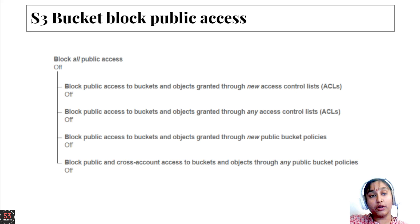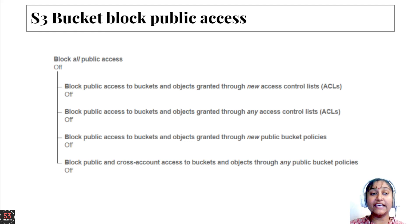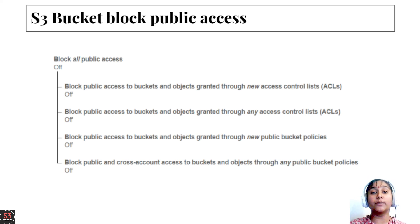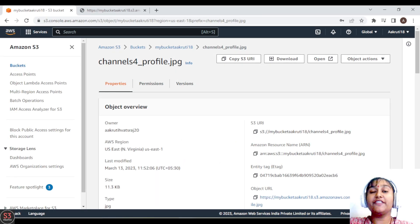The last but most important thing is bucket block public access. In the AWS console, we get the option to block or unblock all public access. This option can be enabled and disabled through the AWS console itself. Now let's move to the hands-on part and create our first bucket policy and attach it to our bucket.